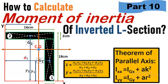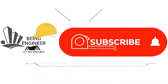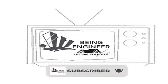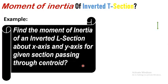Please watch the complete video to understand the topic. We will be using the theorem of parallel axis and the area moment method to locate the centroid or center of gravity of the figure. Our example is: find the moment of inertia of an inverted L-section about the x-axis and y-axis for the given section, passing through the centroid. So we must first find the centroid of the figure.